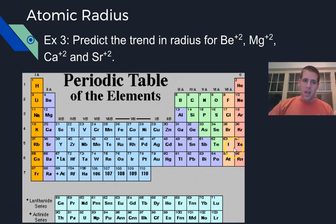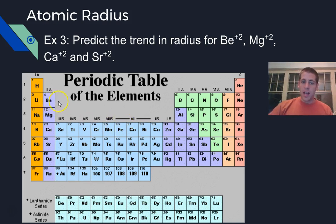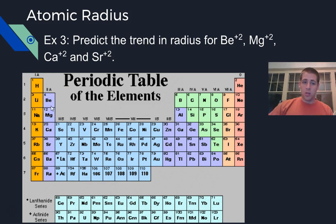Let's also look at ions. The beryllium ion, magnesium ion, calcium, and strontium ions have all lost their two valence electrons from the s sub-level. Essentially, they have the electron configurations of the previous noble gas — beryllium has the configuration of helium, magnesium is like neon, calcium has the electrons of argon, and so on. The same principle still applies: we're still increasing energy levels, so as we increase energy levels, we're going to increase the size of the atom.